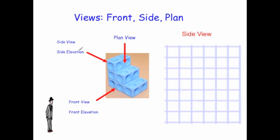Next, let's look at the side view. If you're standing at the left-hand side and looking at the shape, you would see six blocks — it would just be a rectangle. You would see the left-hand side going down, three blocks high. It would go across two, and then up three. So that would be the side view — that's what you would see from the left-hand side.